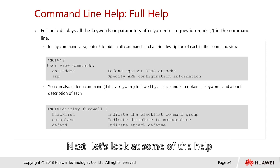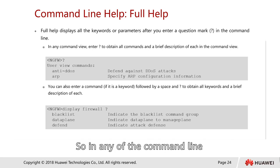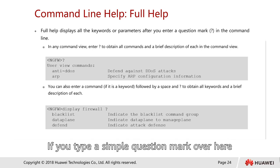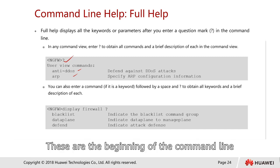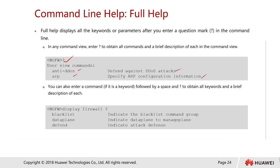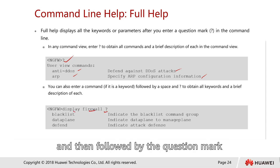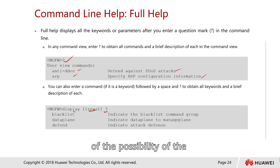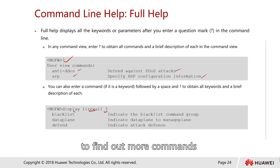Next, let's look at some of the help features. Full help displays all keywords and parameters when you enter a question mark in the command line. In any command view, you can enter a question mark to obtain all available commands and a brief description of each. For example, typing a question mark shows all commands with their descriptions. You can also type a partial command such as 'display firewall ?' and the system will show the possible parameters — for example, 'display firewall blacklist', 'display firewall data-plane', or 'display firewall defense'. Use the question mark as often as possible to discover commands or type commands more precisely.